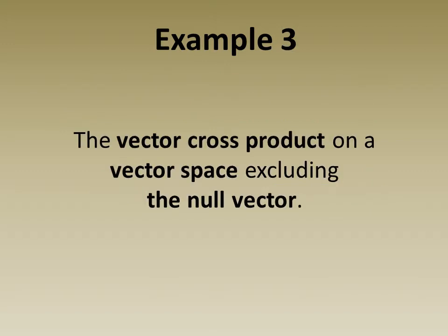In the third example we see that the vector cross product on a vector space excluding the null vector is a binary operation.